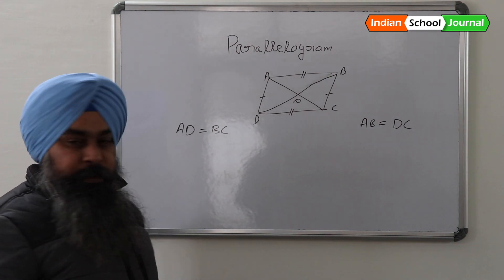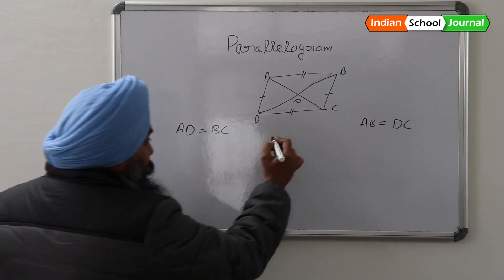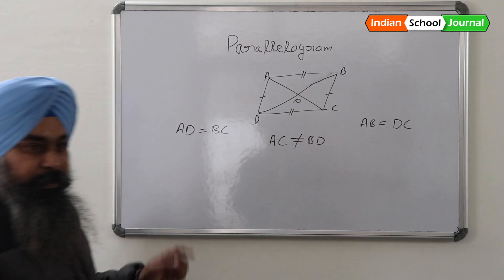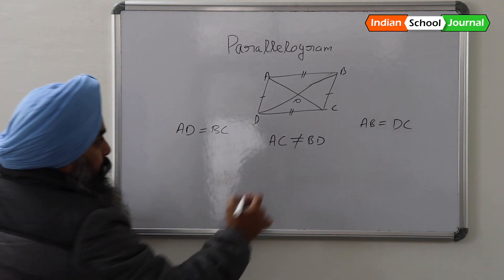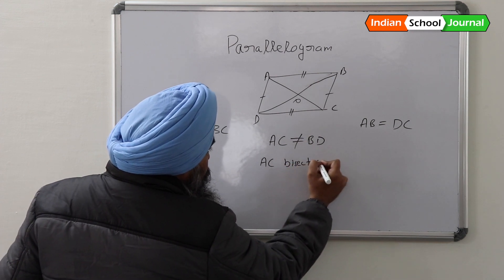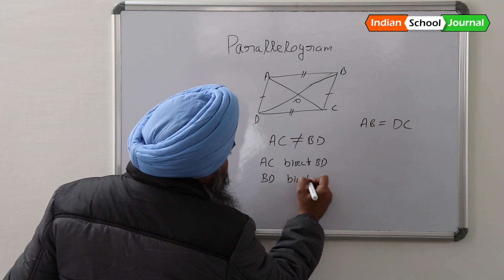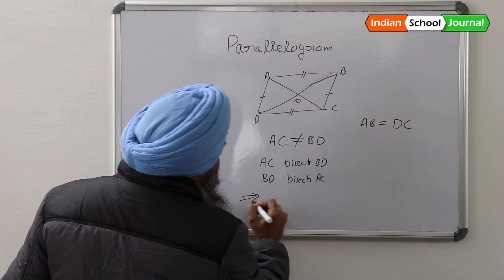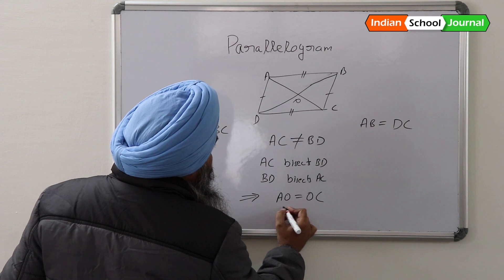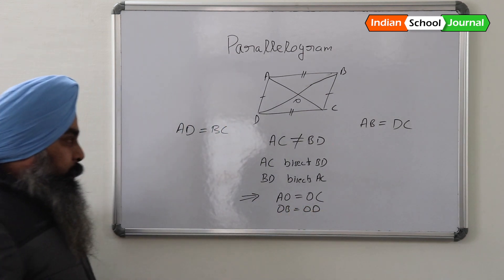Before I reach that point, I should clarify first that AC is not equal to BD. But AC bisects BD and BD bisects AC, which implies AO is equal to OC and OB is equal to OD. I hope things are clear to you right now.